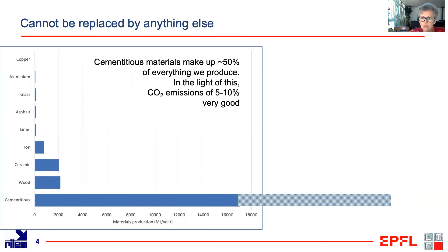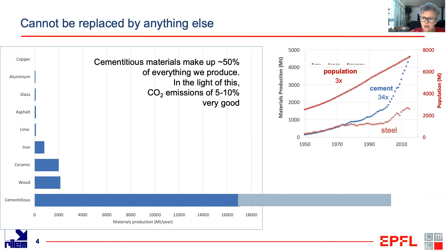We hear so much about the fact that cementitious materials emit between 5 and 10% of CO2, but we have to realize that this is purely due to the fact that they're the most used materials in the world — there are more cementitious materials used than all other materials put together. This was the figure we put in our UN report, but in fact the solid blue shown there is probably an underestimate. And in the last few decades, the use of cement has really taken off compared to other materials.